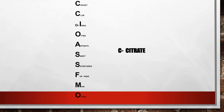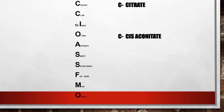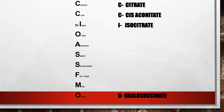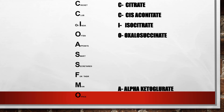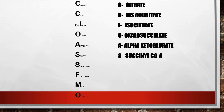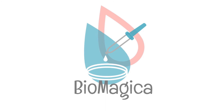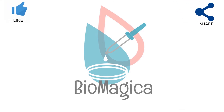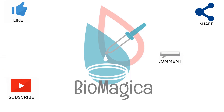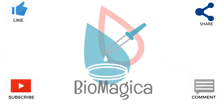Here the C represents citrate, followed by cis-aconitate, isocitrate, oxalosuccinate, alpha-ketoglutarate, succinyl coenzyme A, succinate, fumarate, malate, and finally oxaloacetate. If this video was helpful, please like, share it with your friends, subscribe to my channel, and don't forget to leave your valuable comments. Thank you.